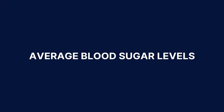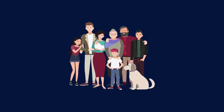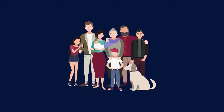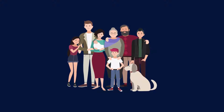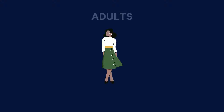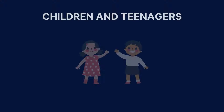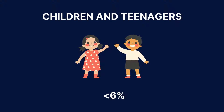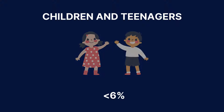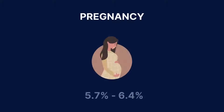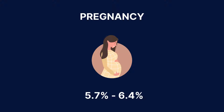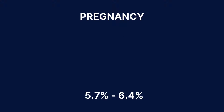A1C levels vary depending on the age of a person. Generally, the target A1C level for adults is around 6%, while target A1C levels are typically below 6% for children and teenagers. Pregnant people should aim for an A1C level between 5.7% and 6.4%, as higher levels can increase the risk of complications during pregnancy and birth.